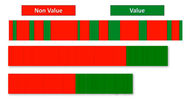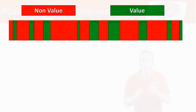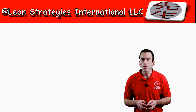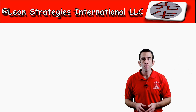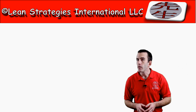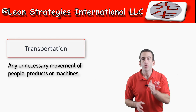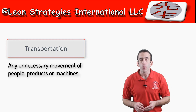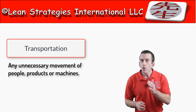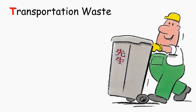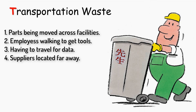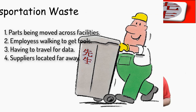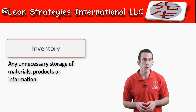To do this, we must be able to identify the eight forms of waste. The first type is transportation waste — any unnecessary movement of products or machines. You will see this when parts are moved across facilities or when employees need to travel excessive distances to retrieve tools, data, or information. The next type is inventory waste.